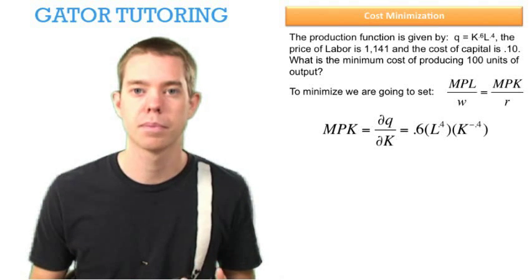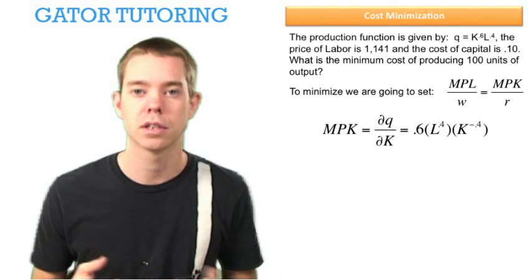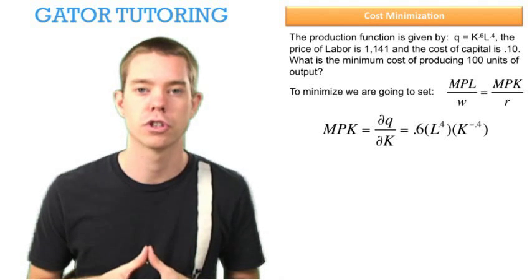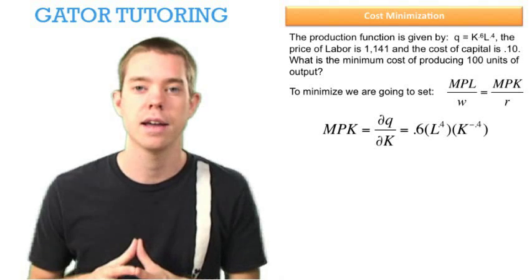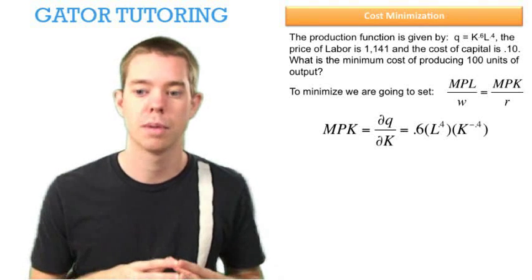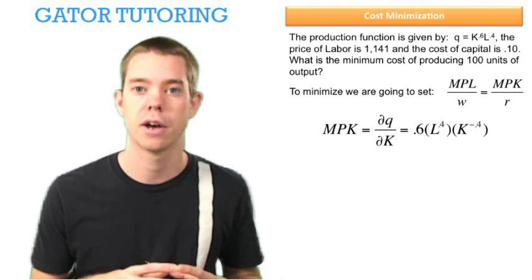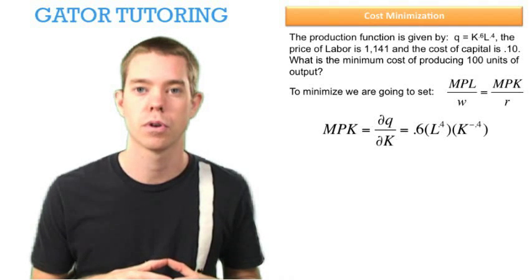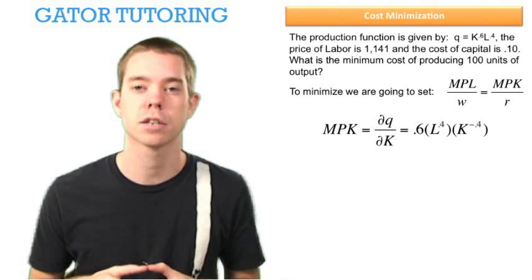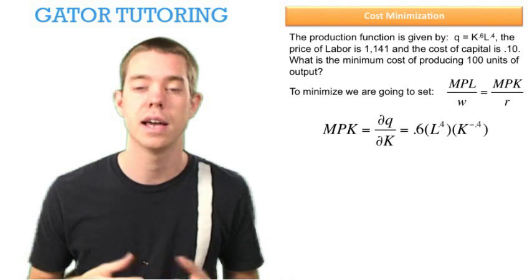The marginal product of capital is the partial derivative of the production function with respect to capital. We treat labor as a constant, so L^0.4 is our coefficient and K is our variable. The variable's exponent is multiplied by the coefficient, so 0.6 comes down in front of L^0.4, and K^0.6 becomes K^-0.4 after subtracting one from the exponent.